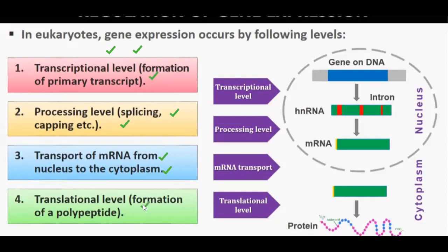Then last is the translational level. So basically, the steps of gene regulation consist of four parts: first, the transcriptional level; second, the processing level; third, the transport of the mRNA from the nucleus to the cytoplasm; and then the translational level. This is how gene expression occurs in different stages.